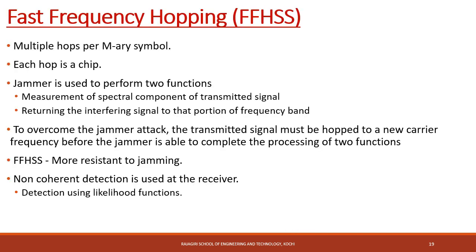In Fast Frequency Hopping Spread Spectrum, there are multiple hops per MFSK symbol — one symbol is transmitted over multiple hopping frequencies. Each hop is considered a chip, and this system is more resistant to jamming because the frequency changes much faster than in slow FH. It is therefore more difficult for the jammer to measure the power and introduce an attack. Non-coherent detection is again used at the receiver.